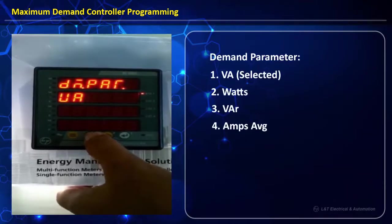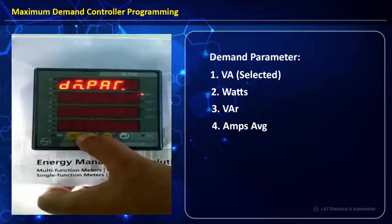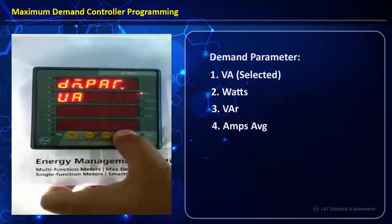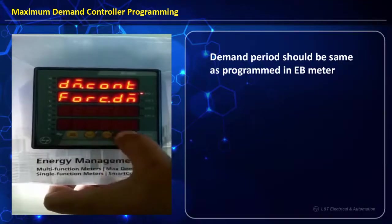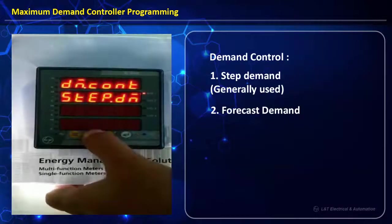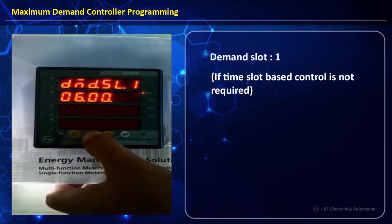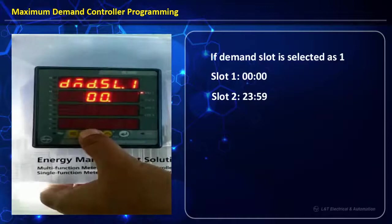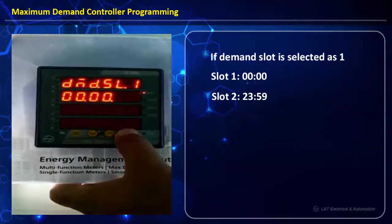Demand parameter can be selected from any of four options; for our programming we will select VA. Demand period can be 15 or 30 minutes. For demand control we will use step demand. Under demand slot, if multiple TODs are present we can program them accordingly. For this video we have taken slot 1 as 00:00 and slot 2 as 23:59.